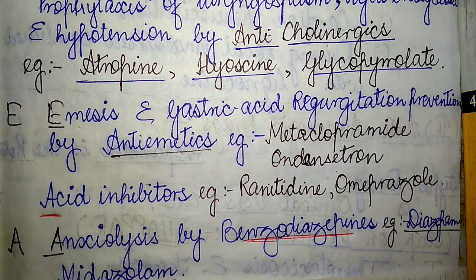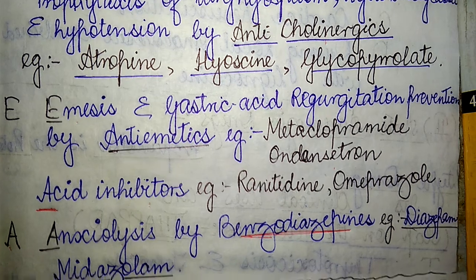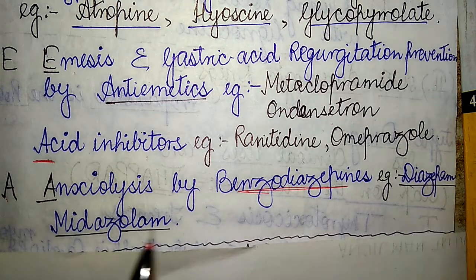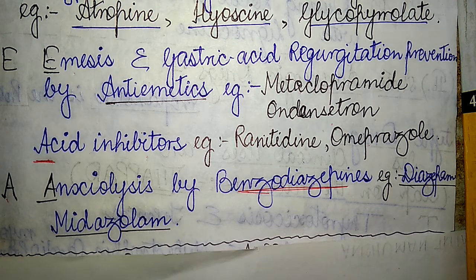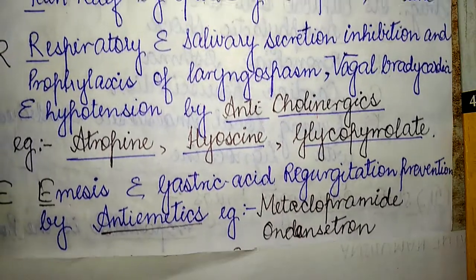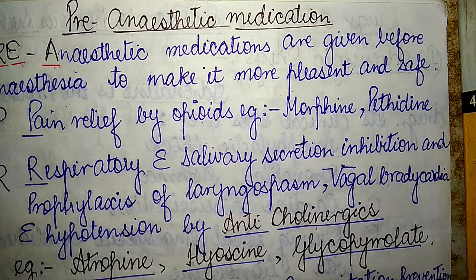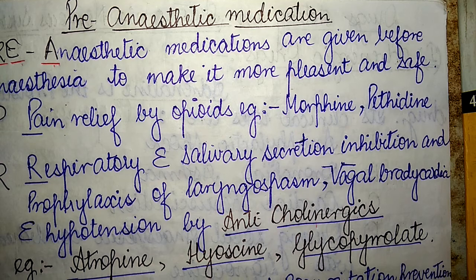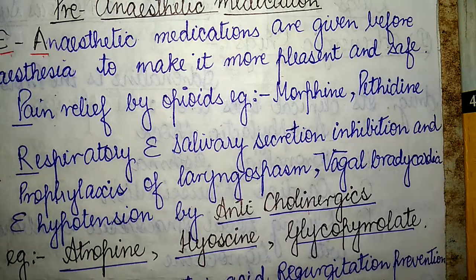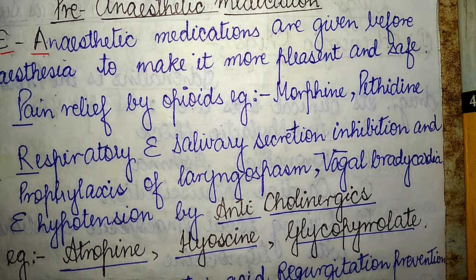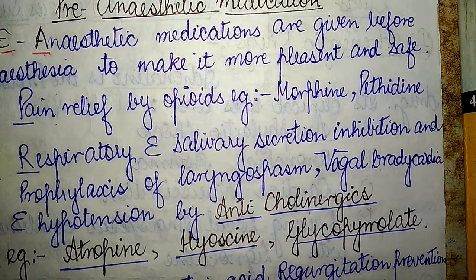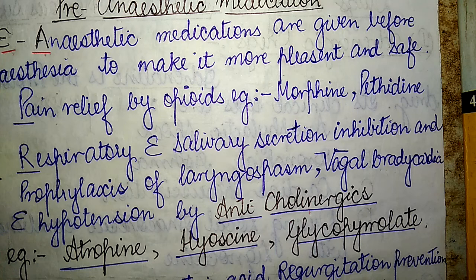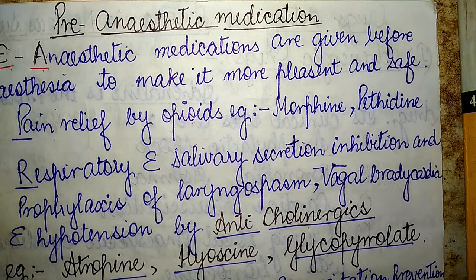The most common anxiolytic drugs given as pre-anesthetic medication include diazepam and midazolam. This mnemonic PREA helps easily remember the pre-anesthetic medications and the classes of drugs used before anesthesia administration to make it more acceptable and pleasant for the patient, prior to general anesthesia.